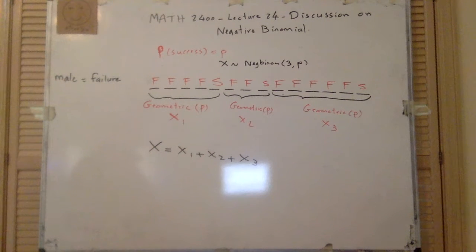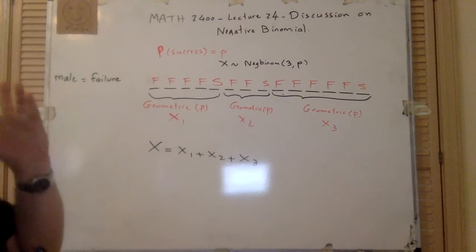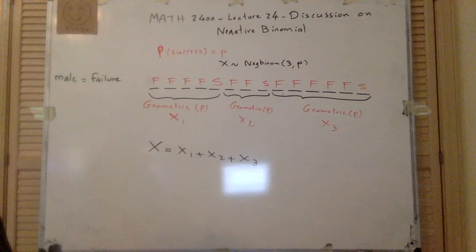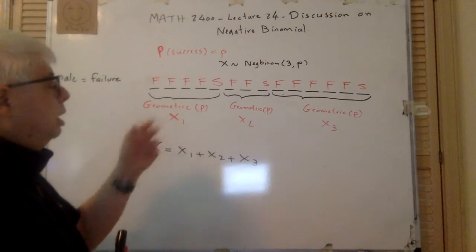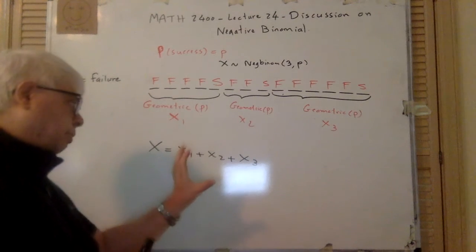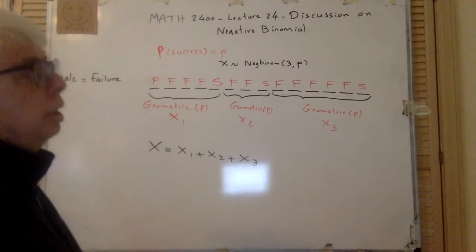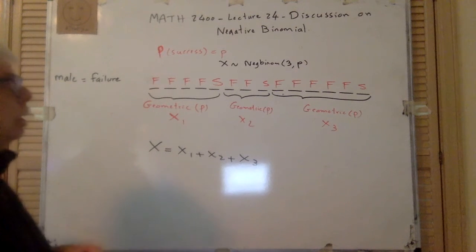So if X is negative binomial three-comma-P, then I can write it as the sum of three geometric distributions — three random variables — where each Xi is geometric P and they are independent. So if I add R of them — if X1 plus X2 plus ... plus XR and each Xi is geometric P — then X will be negative binomial R-comma-P.